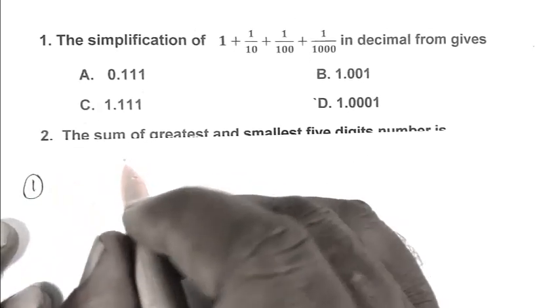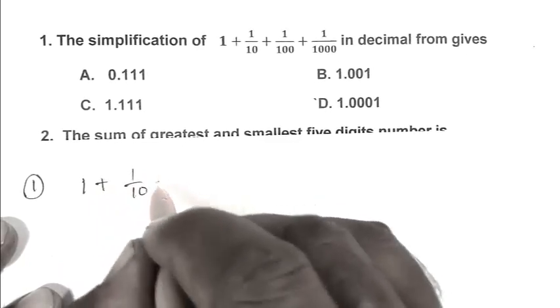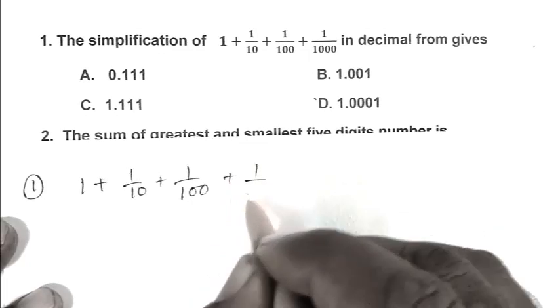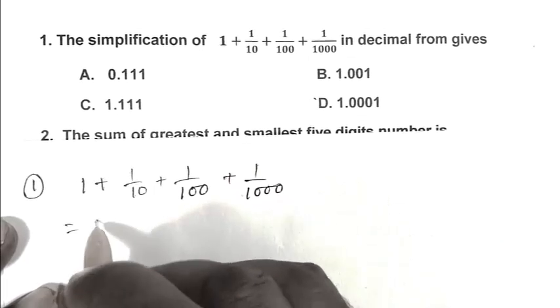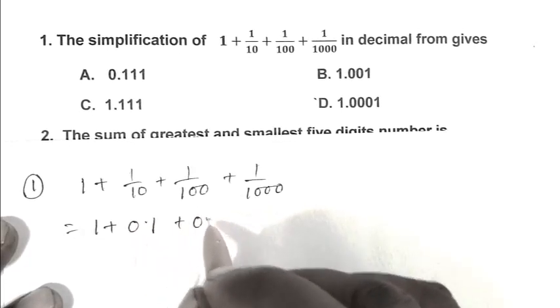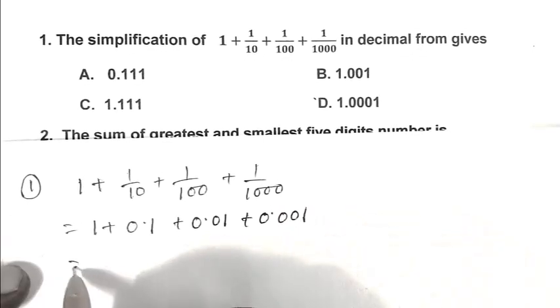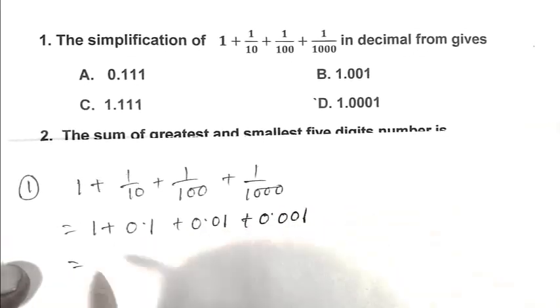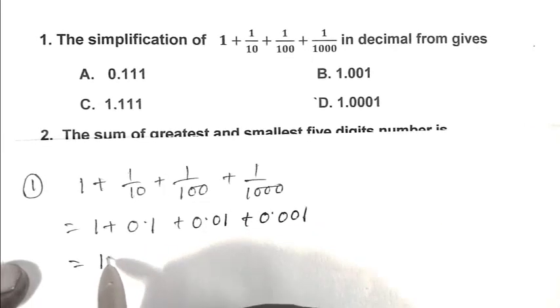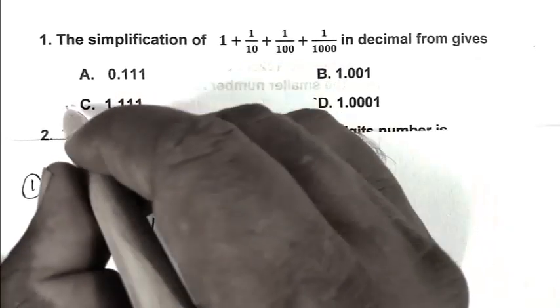The simplification of 1 plus 1 upon 10 plus 1 upon 100 plus 1 upon 1000 in decimal form gives. The expression is 1 plus 0.1 plus 0.01 plus 0.001. Adding these numbers we get 1.111. So C is the right answer.